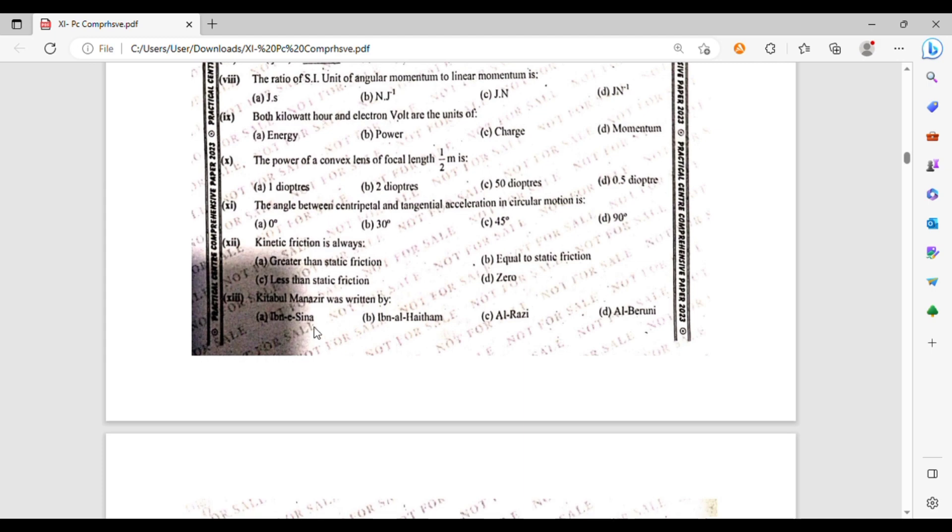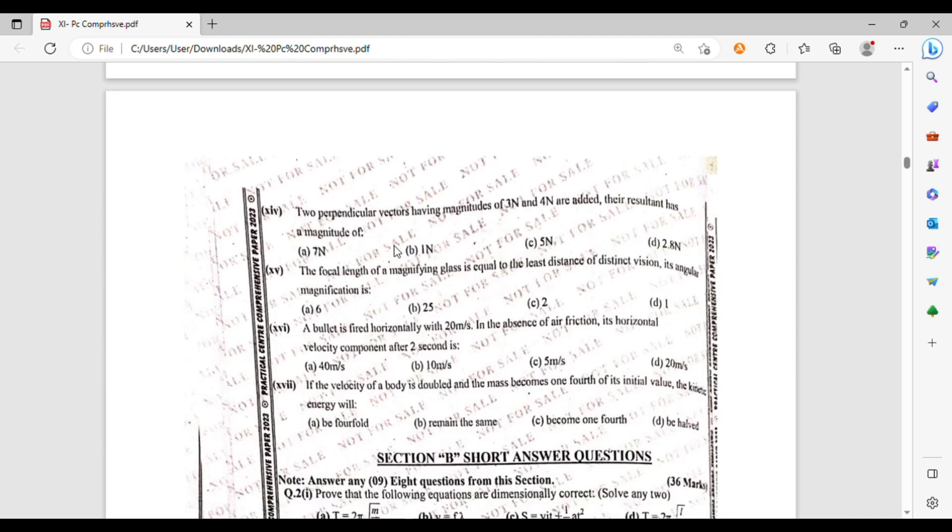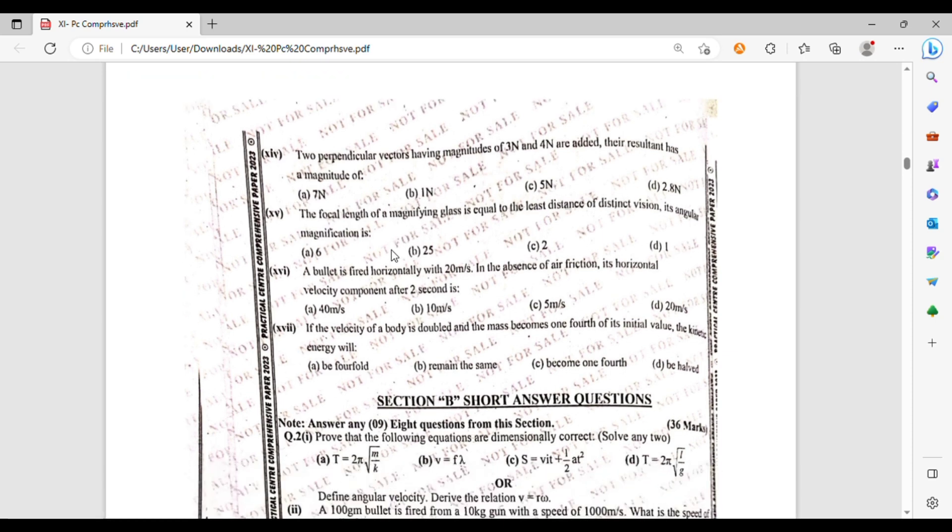The angle between two perpendicular vectors have a magnitude of 3 newton and 4 newton when added. The resultant magnitude is 7 newton, 1 newton, 5 newton, or 2.8 newton. The focal length of a magnifying glass is equal to the least distance of distinct vision. Its magnification is 6, 25, or 1. A bullet is fired horizontally with 20 meter per second in the absence of air friction. The horizontal velocity component after 2 seconds is 40 meter per second, 10 meter per second, 5 meter per second, or 20 meter per second.